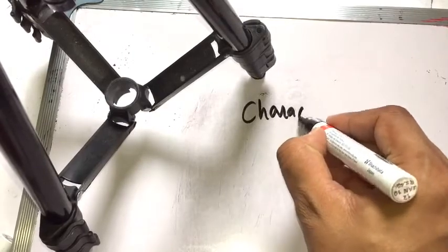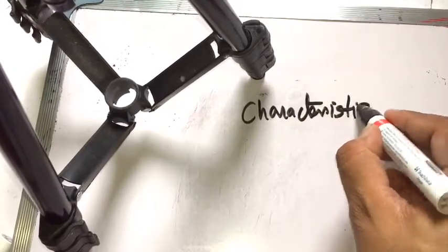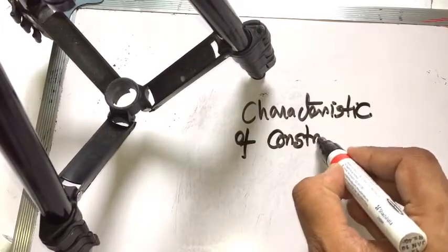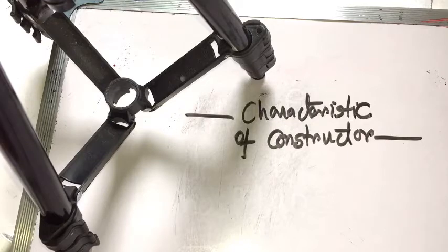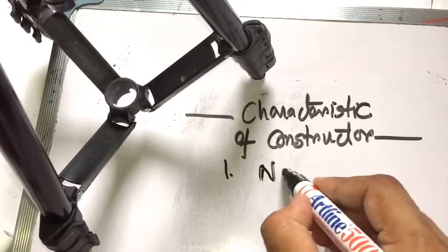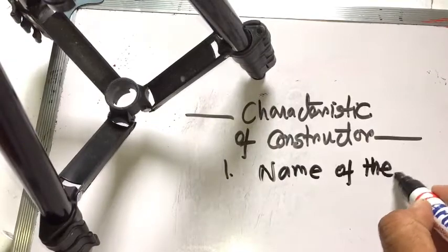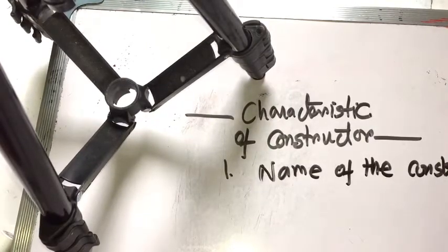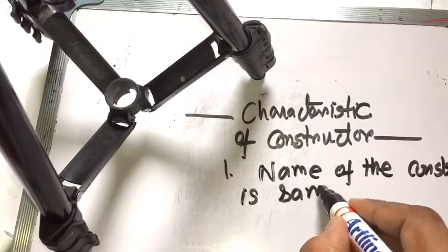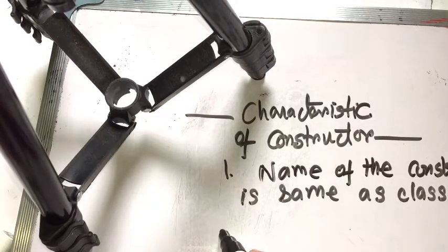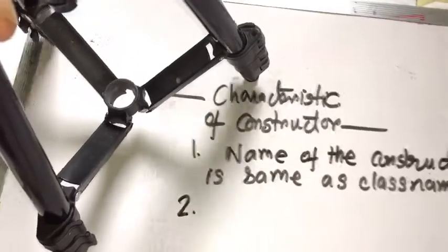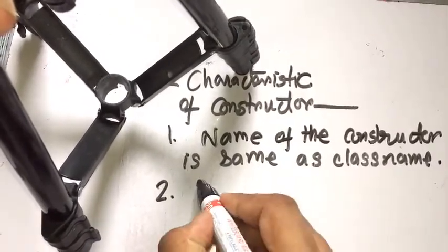Characteristics of constructor. Number one: the name of the constructor is same as the class name.